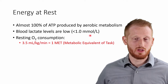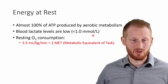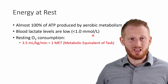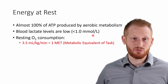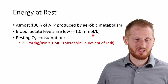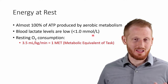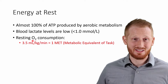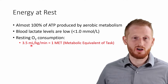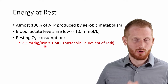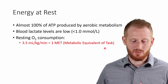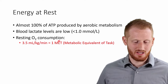At rest, less than one millimole per liter of blood is normal. There's always going to be a little bit — our red blood cells, for instance, do not have the ability to use aerobic metabolism, so there's always a little bit of lactate being produced by them. At rest, our oxygen consumption level is going to be 3.5 milliliters of oxygen per kilogram of body mass per minute, which equals one MET — one metabolic equivalent of task — a common metabolic unit for exercise prescription.